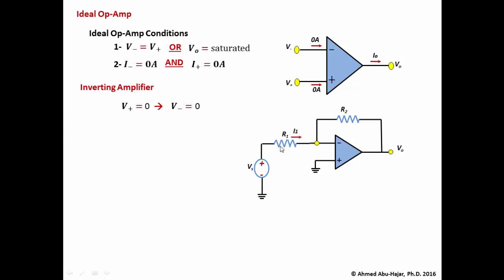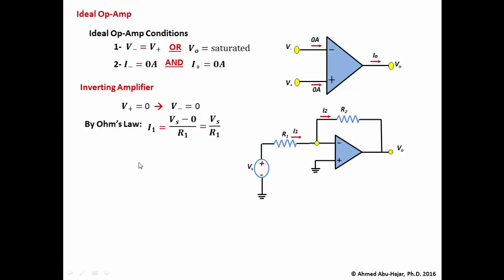Using Ohm's law, i1 equals the voltage across R1 divided by R1, which is Vs minus zero over R1, giving i1 = Vs/R1. For i2, the current through R2, we similarly apply Ohm's law: i2 equals zero minus Vout over R2, which is negative Vout over R2.